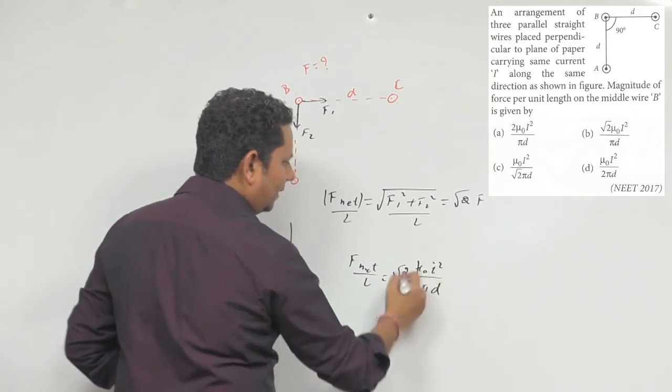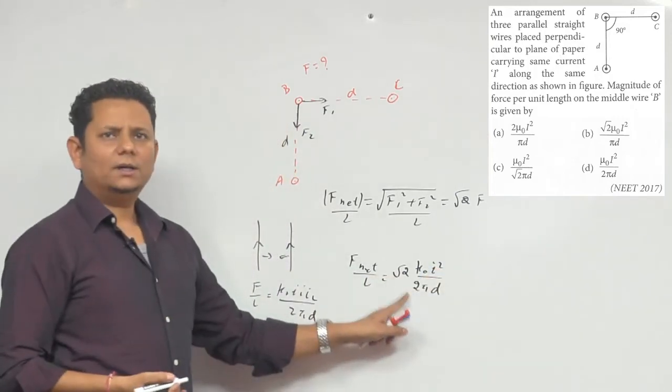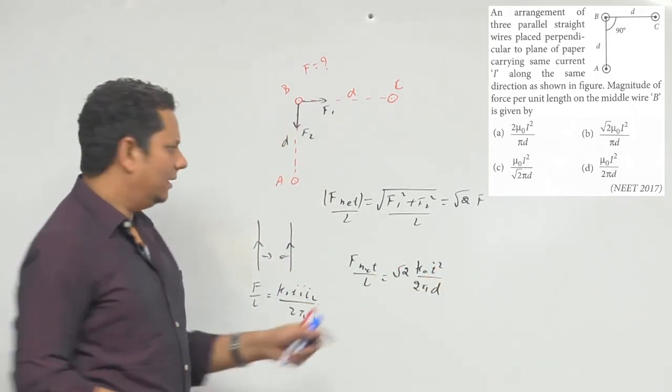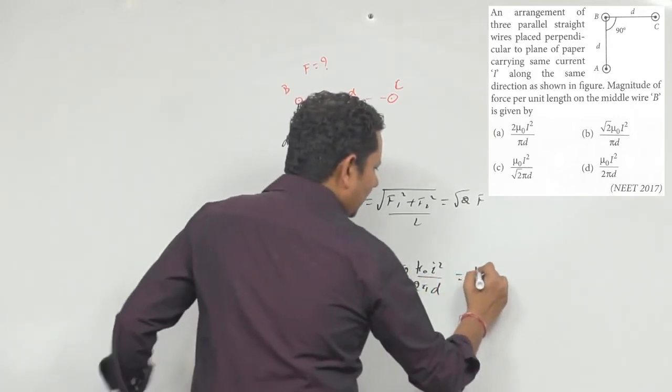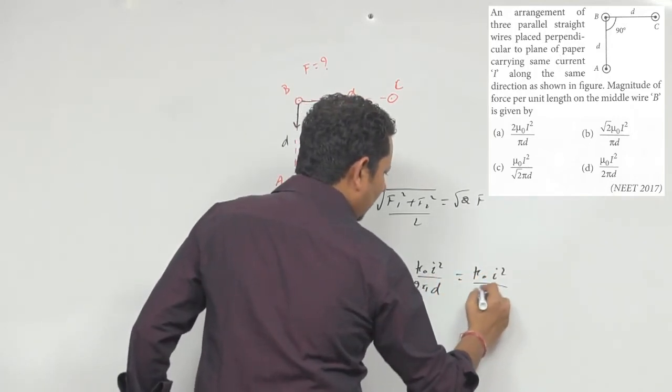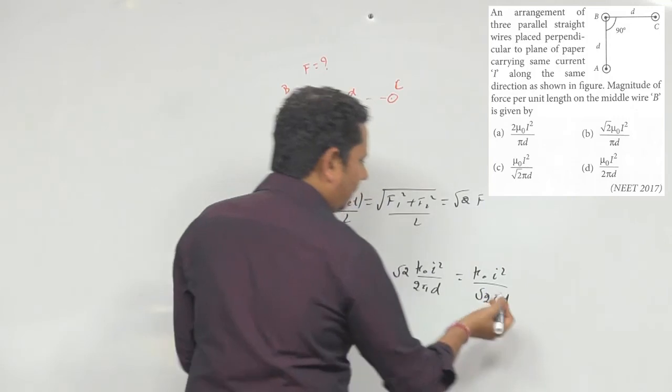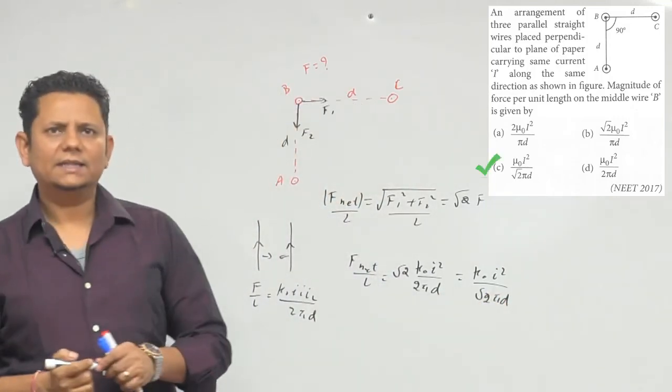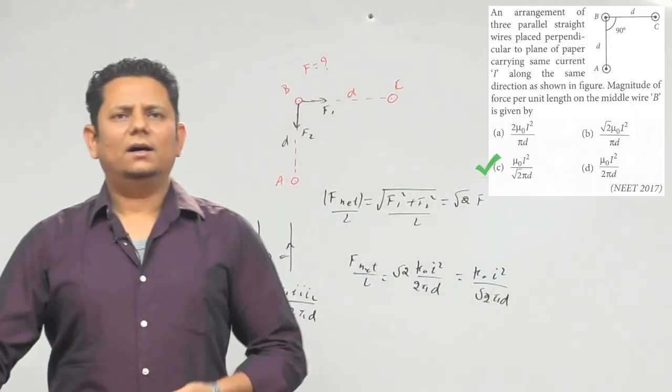तो यह आपका under root 2 से यहां पर 2 cancel हो जाएगा तो आपका final result जो रह जाएगा वह हो जाएगा mu naught i square divided by root 2 pi d. So based on this we can say that option number c would be the right answer.